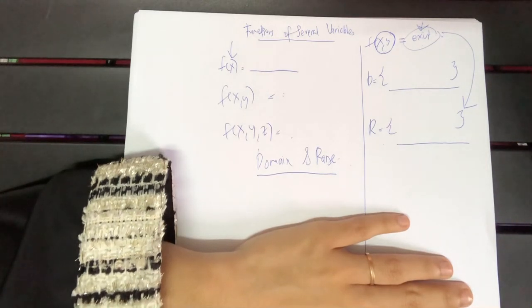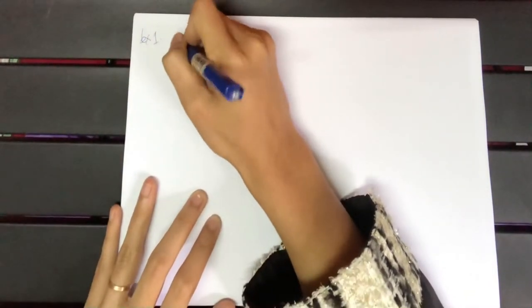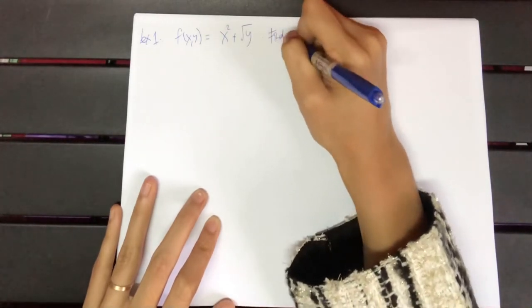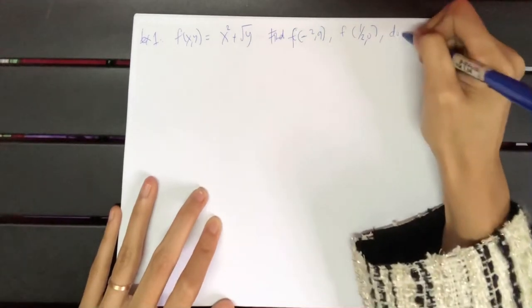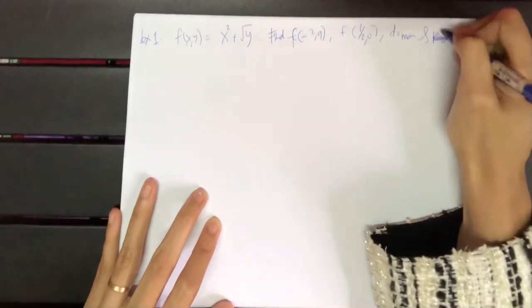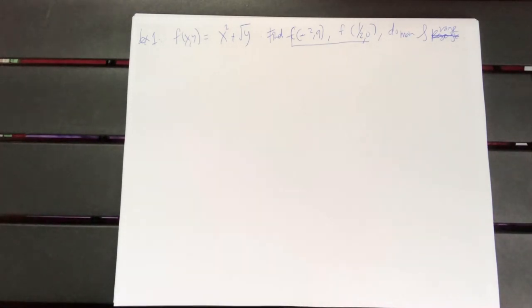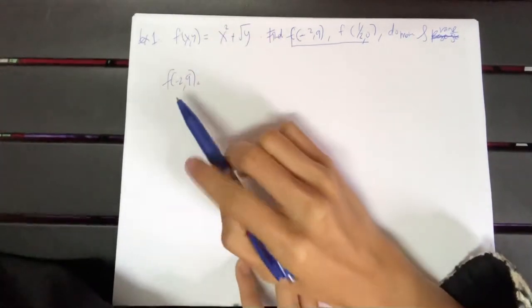Now, range — range must also be a set. If domain is the value of x and y, then range is the value of the answer that you get. After you substitute all the domain values into your function, the resulting values form the range. That is range: the set of output values of your function after substitution. Let's go to Example 1: for f(x, y) = x² + √y, find f(-2, 9), f(1/2, 0), the domain, and the range.